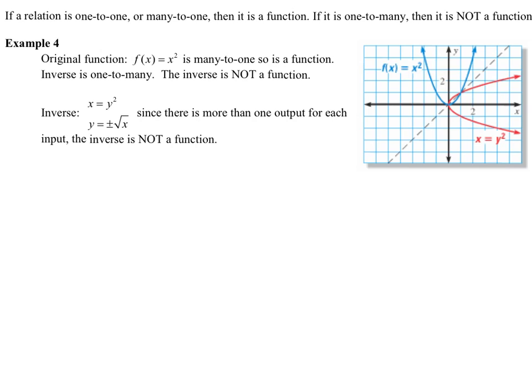So, one-to-one and many-to-one and one-to-many are some terms you might think about when you're talking about defining if something is a function or not. An example of this would be the function y = x², or f(x) = x². That is a many-to-one function. We have many x values, and each of those x values has one y value associated with it. So, that is a function. However, if I took the inverse of a parabola, I would get a parabola, but it's laying on its side.